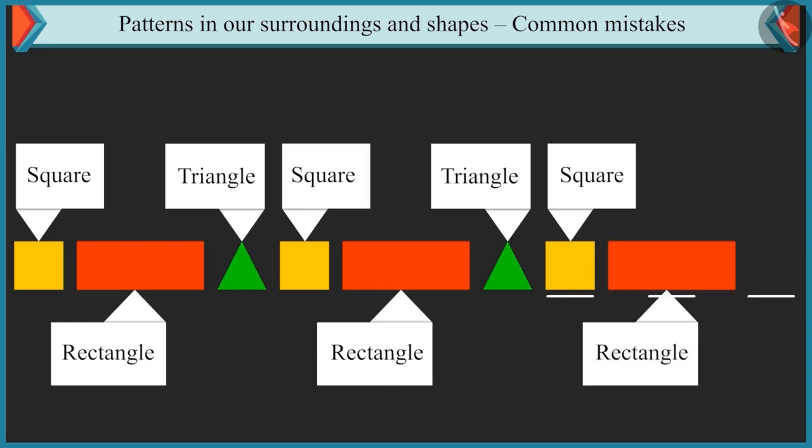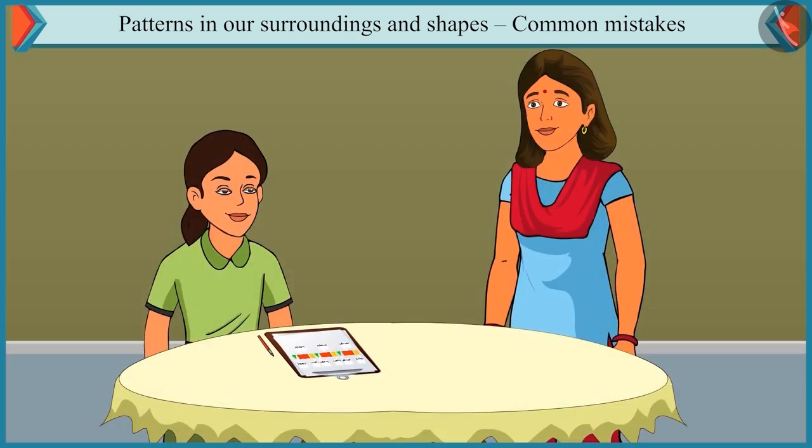If we repeat these shapes in this order, then after triangle, square, after square, rectangle and after rectangle, it is triangle. See, this pattern is complete. Well done, Chitki.